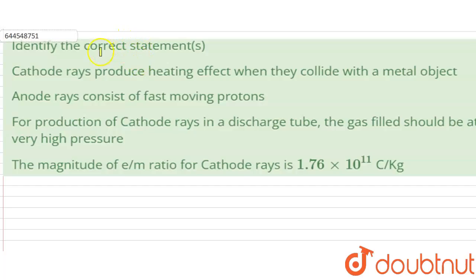Question: identify the correct characteristics. The options given are cathode rays produce heating effect when they collide with a metal object, anode rays consist of fast moving protons, and there are two other options.